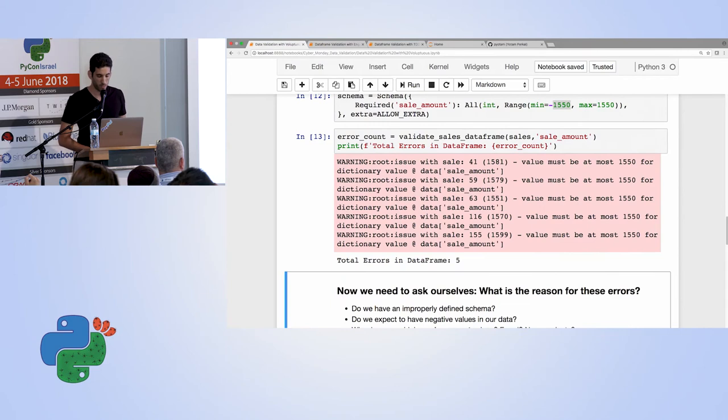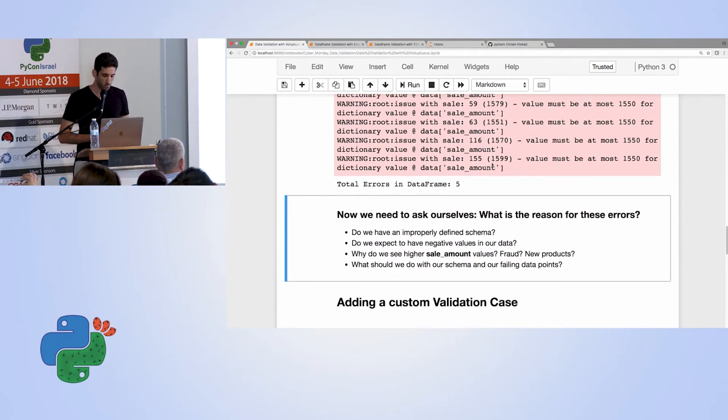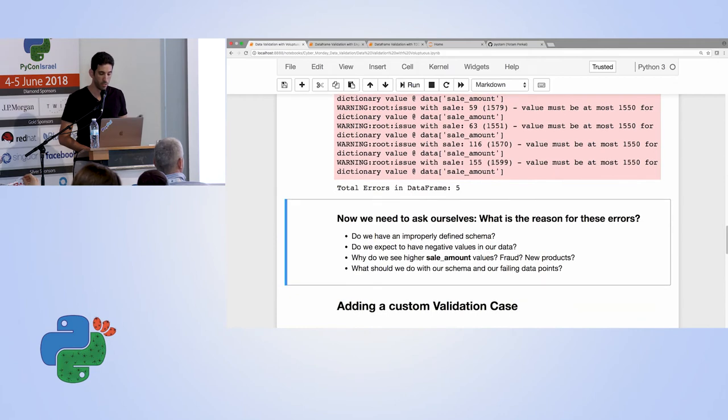And we might look at the data and decide, okay, that might be a return. Someone maybe bought an item, but wanted to return them and we wanted to refund this money. So if I know that the maximum price of an item in my store is 1,550, I expect to get at minimum minus 1,550. And then we run it again. And we see that this time we have less errors. But there are still a few values that are higher than what we expect. And again, there could be multiple reasons. In this case, maybe it's even new products that came into the store and I wasn't aware of it. And I maybe have to update my schema accordingly. Or it can be fraud. Someone accessed my data and changed it or something is wrong and I need to address it.